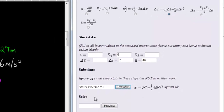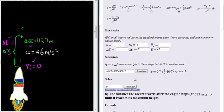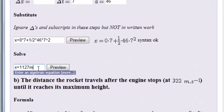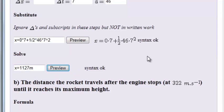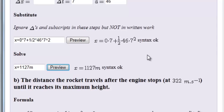Okay, and now we enter our final answer. X is equal to, and we calculate it, 1,127 meters. Don't forget your units in your answer, preview. There we go, perfect.